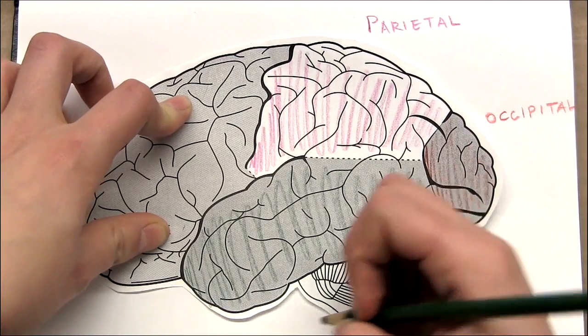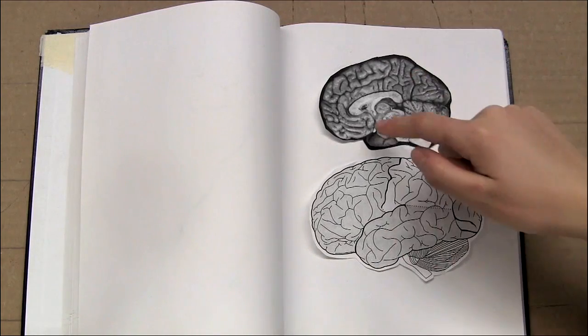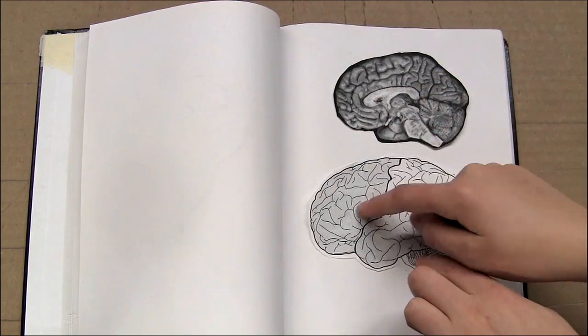The temporal lobe runs down the side of your head and takes care of how you hear, as well as holding memories and emotions like the limbic region, which it's right next to.